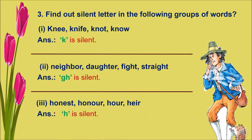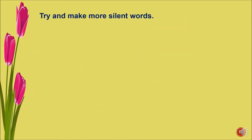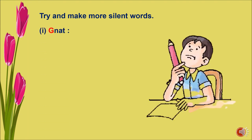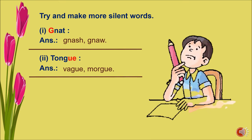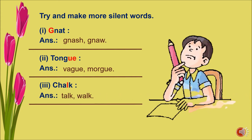Now try to make more silent words. Number one: knot — the silent letter is K. Number two: tongue — the silent letters are U and E. Number three: chalk — the silent letter is L, as in talk and walk. Number four: whistle — the silent letter is T, as in bustle and hassle.